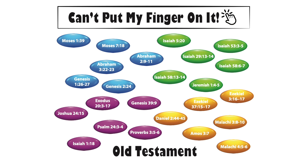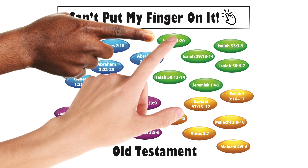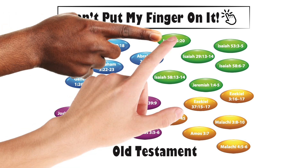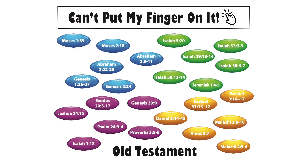Try another clue: 'Woe unto them that call evil good and good evil.' The first student to get his finger on the correct reference wins. This is a great game to develop some movement in the classroom and help students get to know each other a little better.